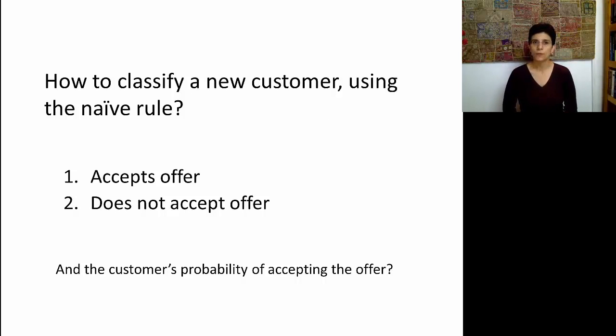Now let's think about the Naive Rule. A new customer comes in. What is the Naive Rule going to do? Will it classify this customer as someone who will accept the offer or someone who will reject the offer? Think about that and remember the information that we had thus far. That information is sufficient to tell us that since only 480 of the customers out of the 5,000 total accepted the offer, the majority did not accept the offer, and therefore this new customer, according to the Naive Rule, is most likely not to accept the offer.